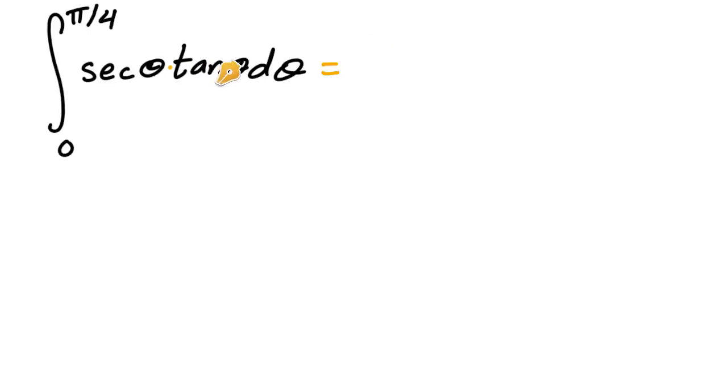So what you want to do is just think, what's the function that when you get the derivative of it, it equals secant θ tangent θ. So you think, you have your library of derivatives in your brain and you go, oh I know, secant. Because the derivative of secant is secant tangent.